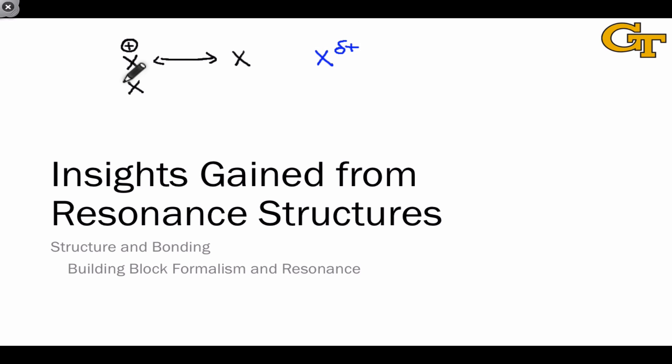Likewise, if we see a negative formal charge on an atom in one resonance structure and a neutral formal charge on that atom in another resonance structure, we can conclude that there is a partial negative charge on that atom.